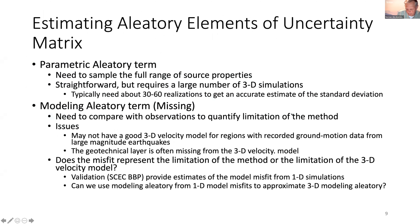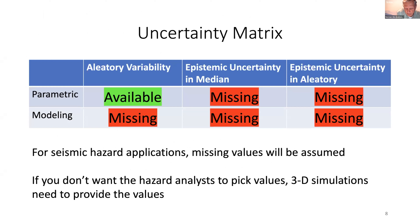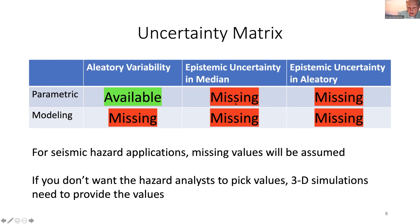Right now we have one piece and we're missing five of them. In seismic hazard analysis, if we have missing values, we're going to assume them. So if you don't want the hazard analyst picking values and inserting them, the 3D simulations need to start providing this. As an example, for tsunami hazard I was given just the medians and aleatory variability and had to fill in the rest based on other empirical models. We're going to put values in whether they're estimated or not, so simulation groups need to start filling in these numbers.